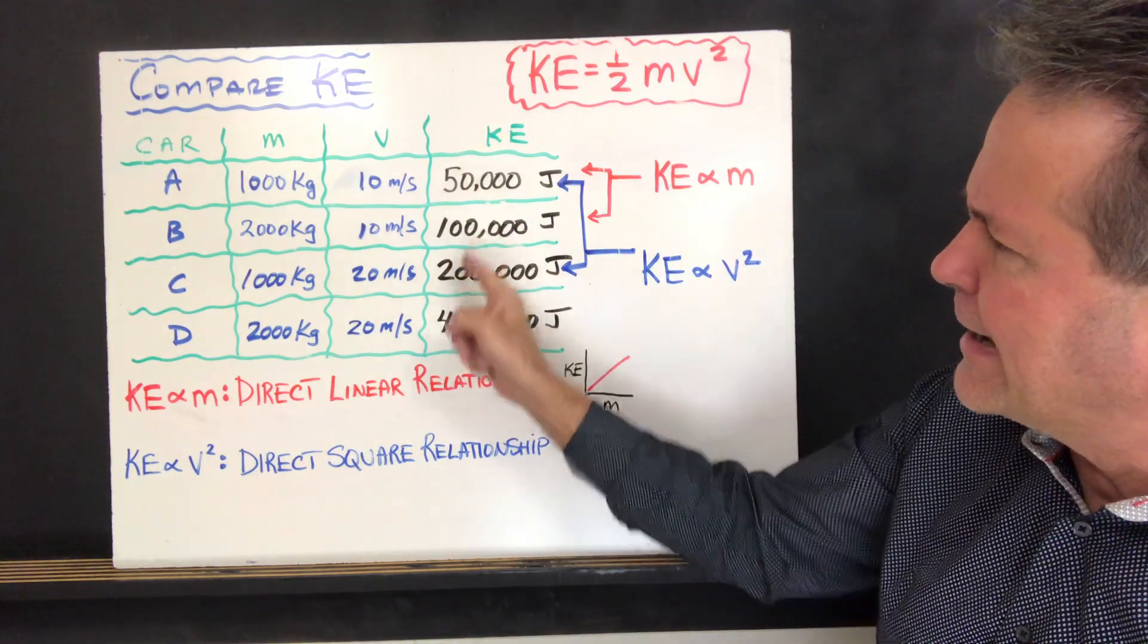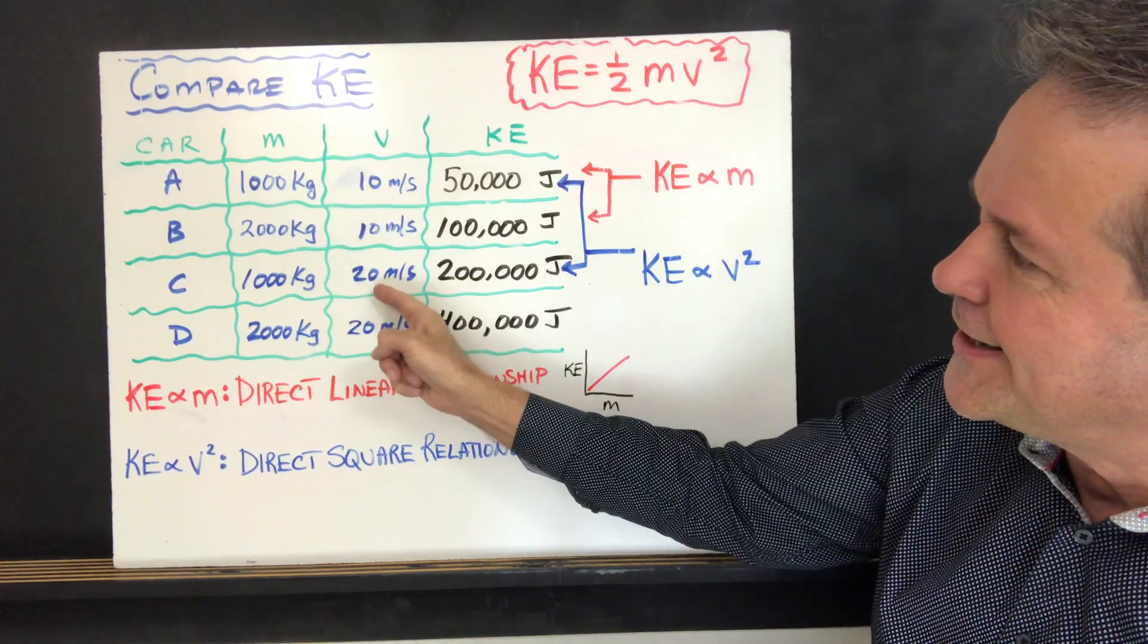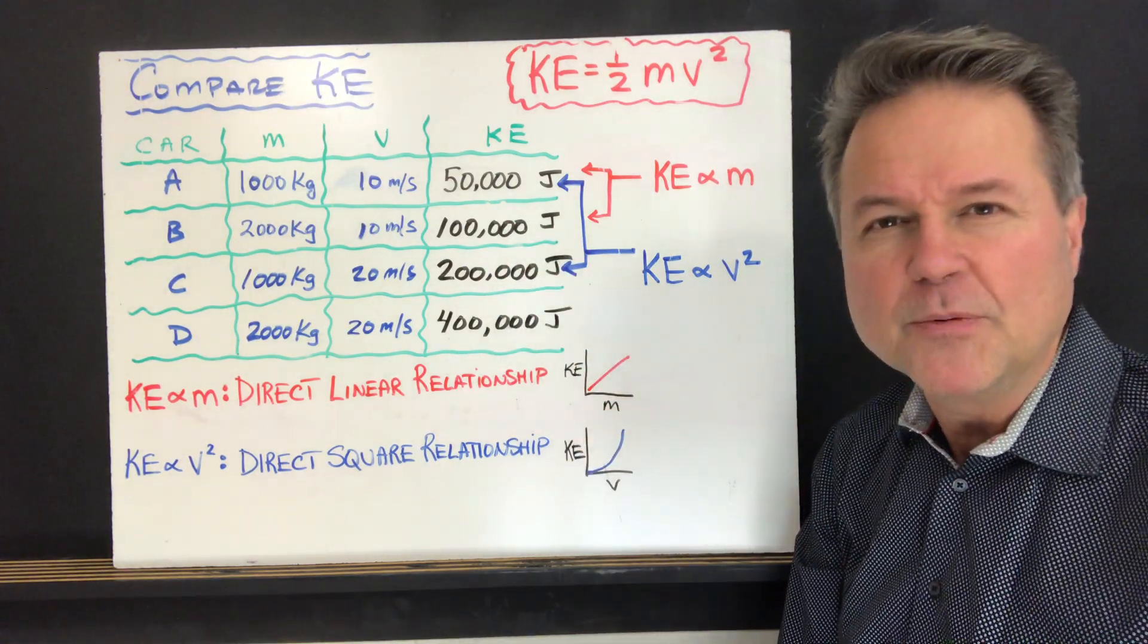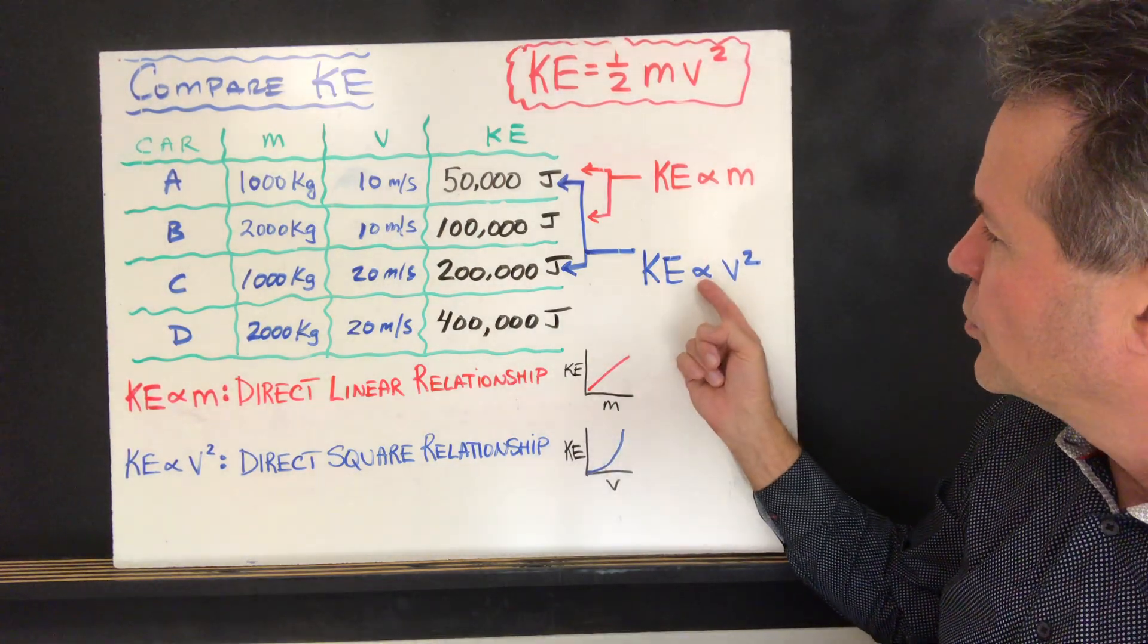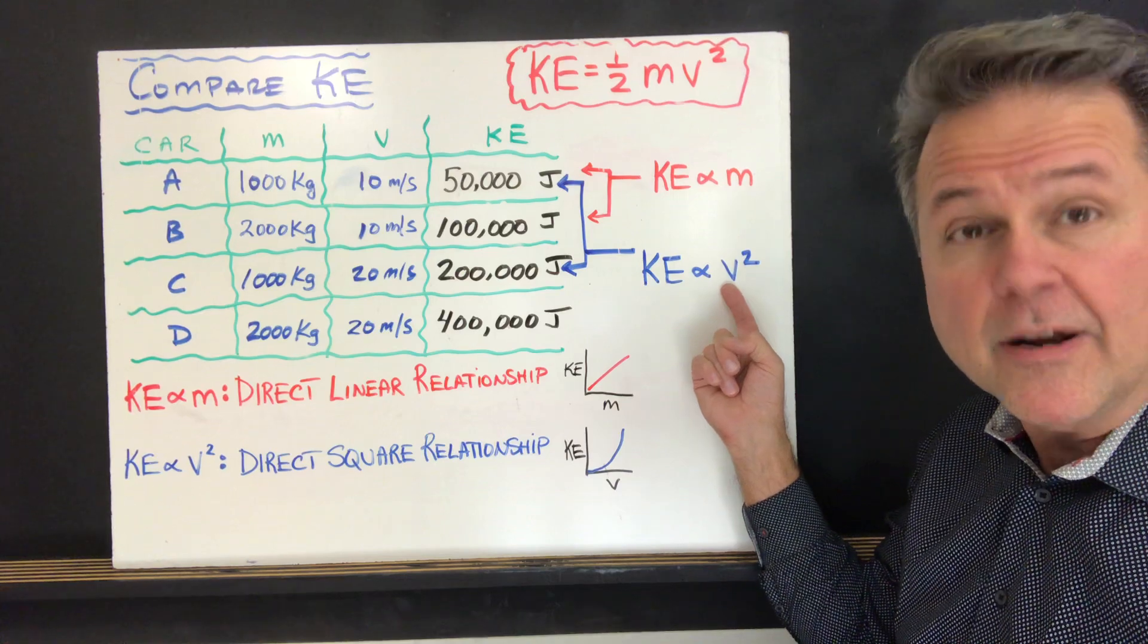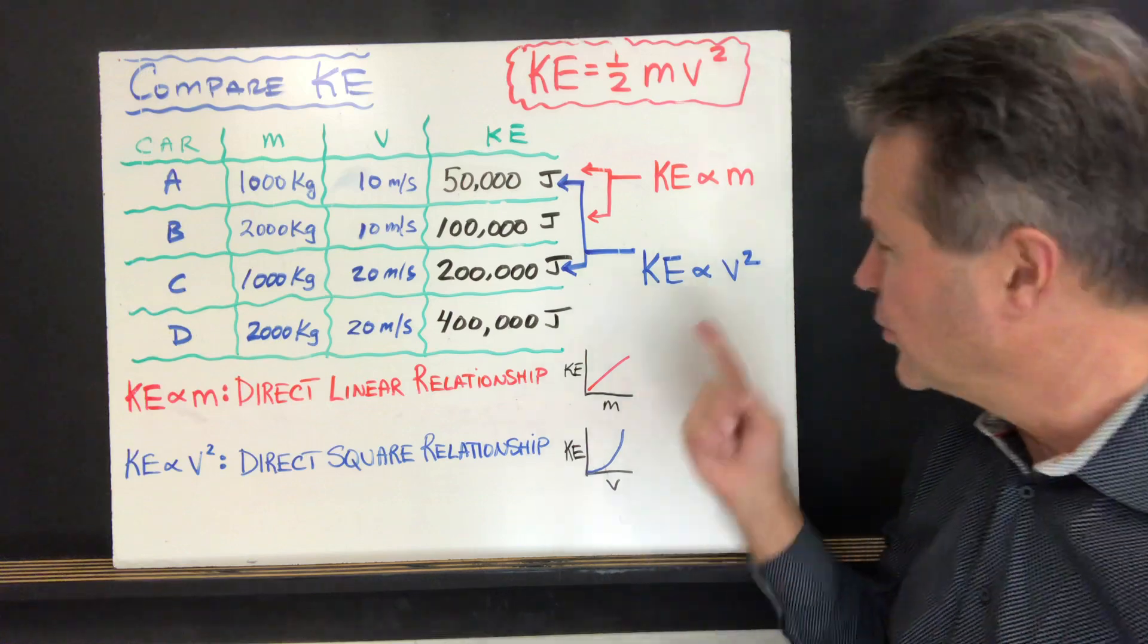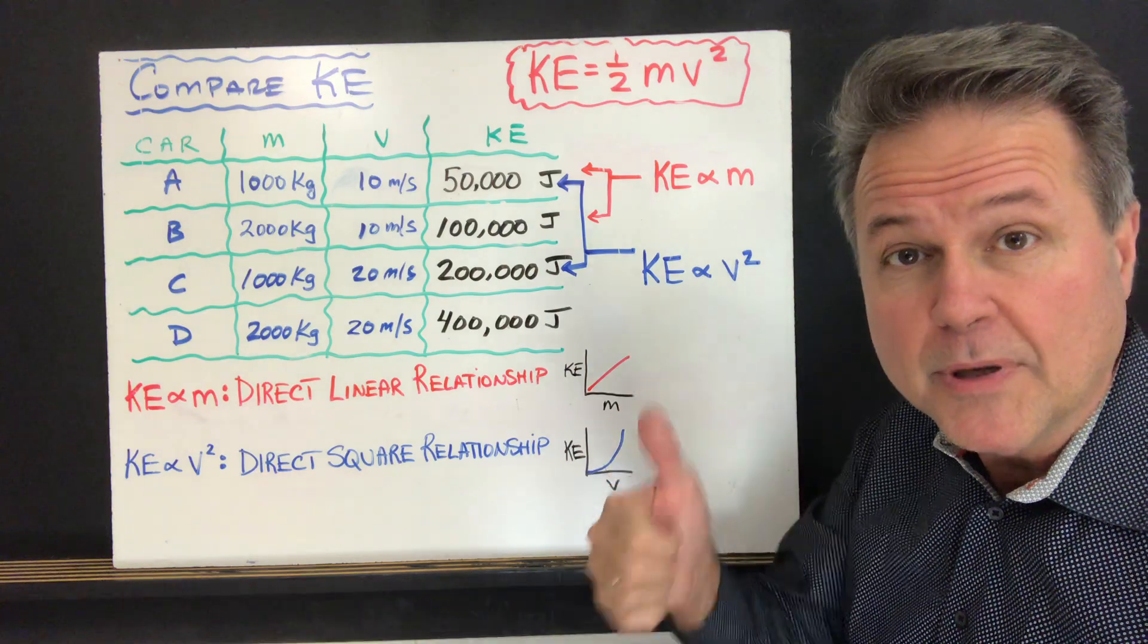So now let's have a look at A and C. So A and C both have the same mass, but you see C has twice the velocity of A. So twice the velocity, but it has four times the amount of energy, four times if you double the velocity. Well that makes sense too. Because you see kinetic energy is directly proportional to the square of the velocity. So if you double the velocity, that would be double squared, or the kinetic energy goes up four times. If you triple the velocity, the kinetic energy would go up nine times. And if you quadruple the velocity, quadruple squared is 16, the kinetic energy would go up 16 times.